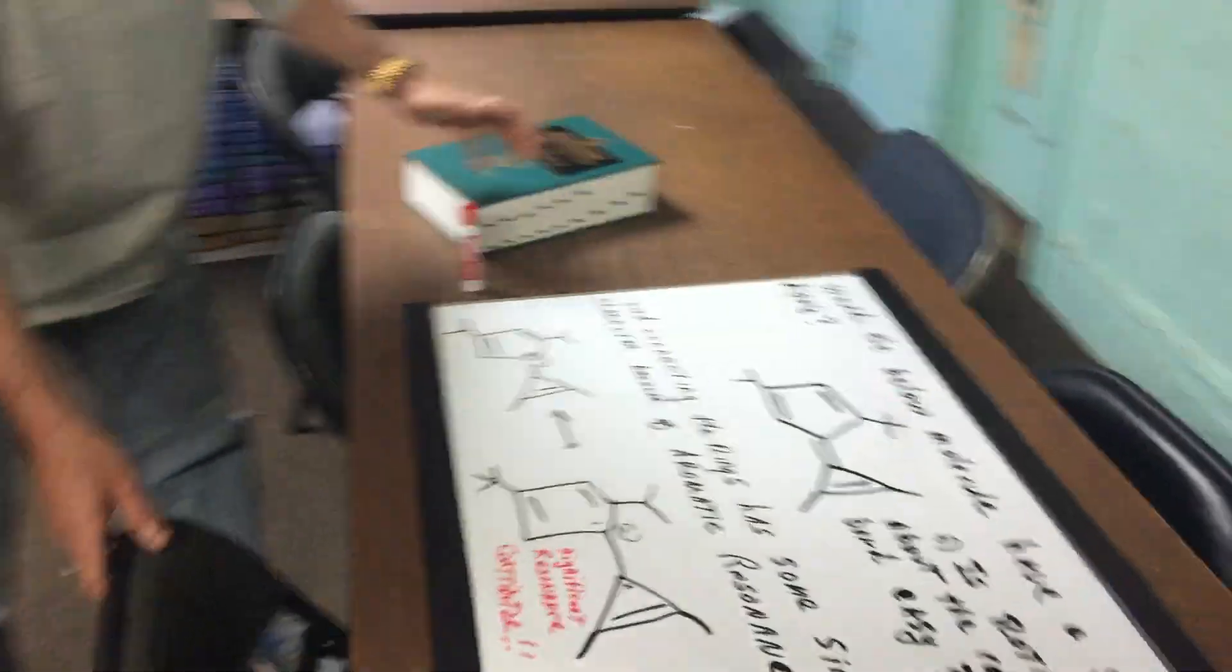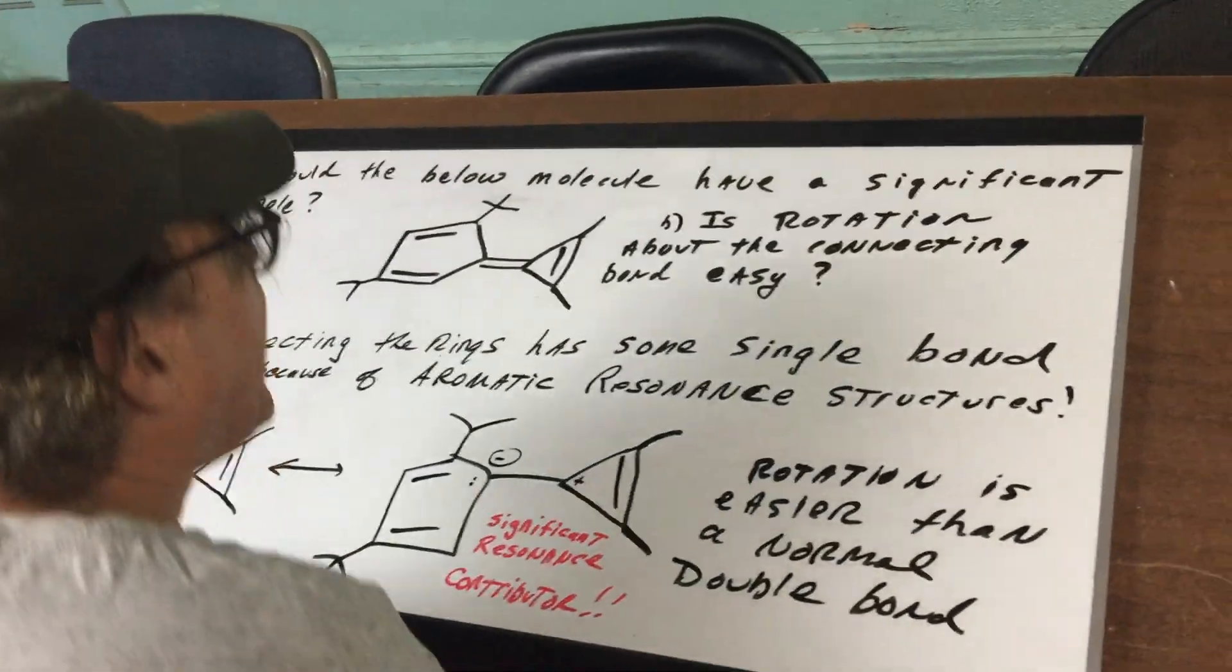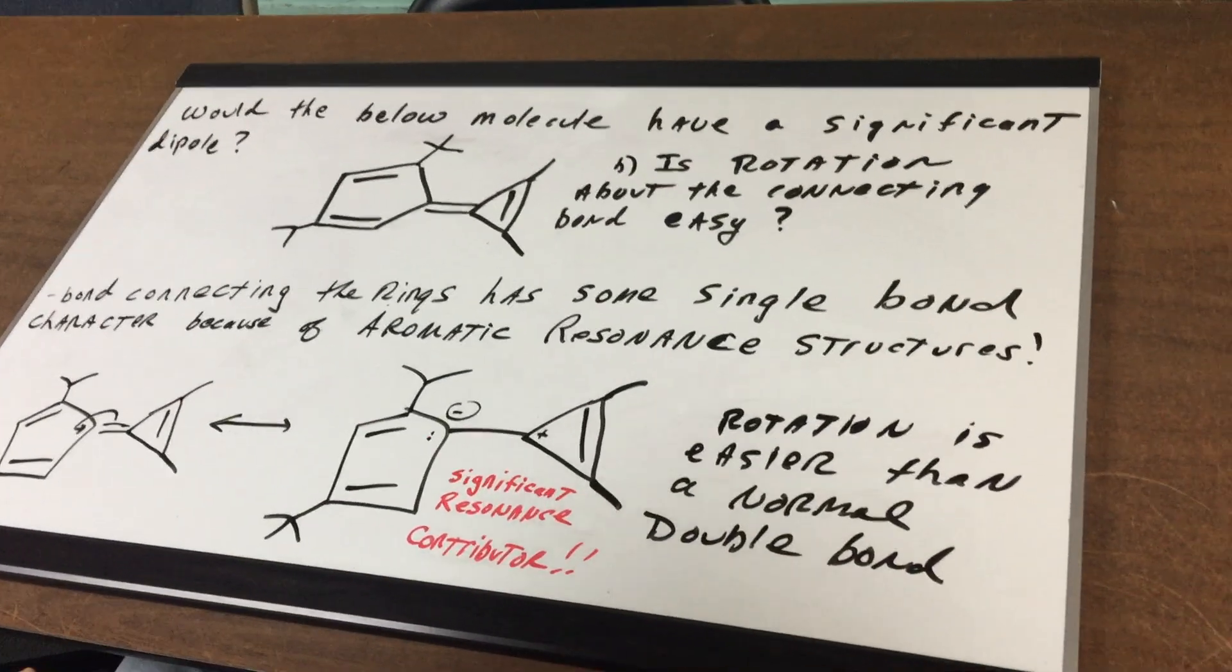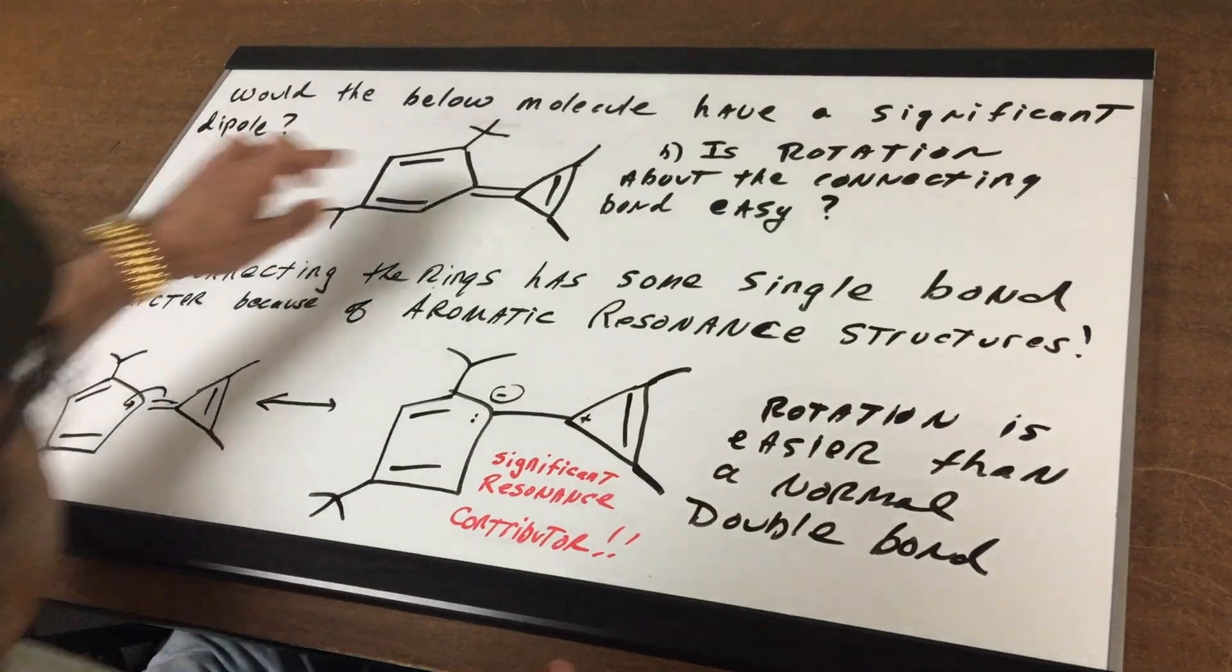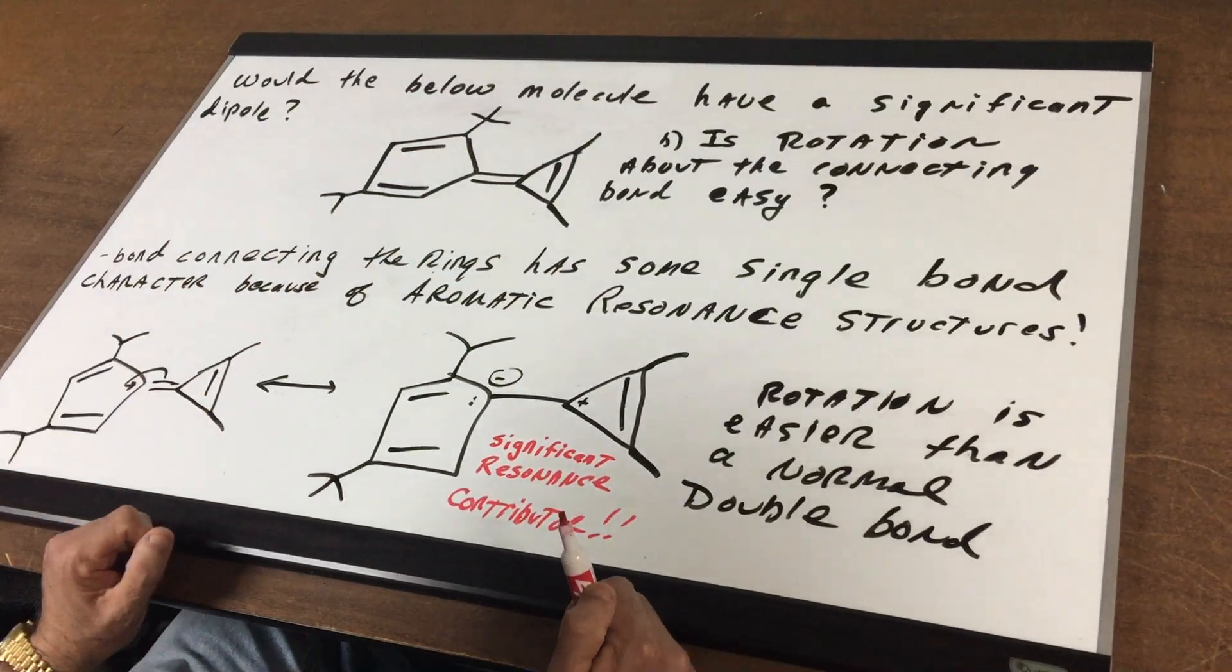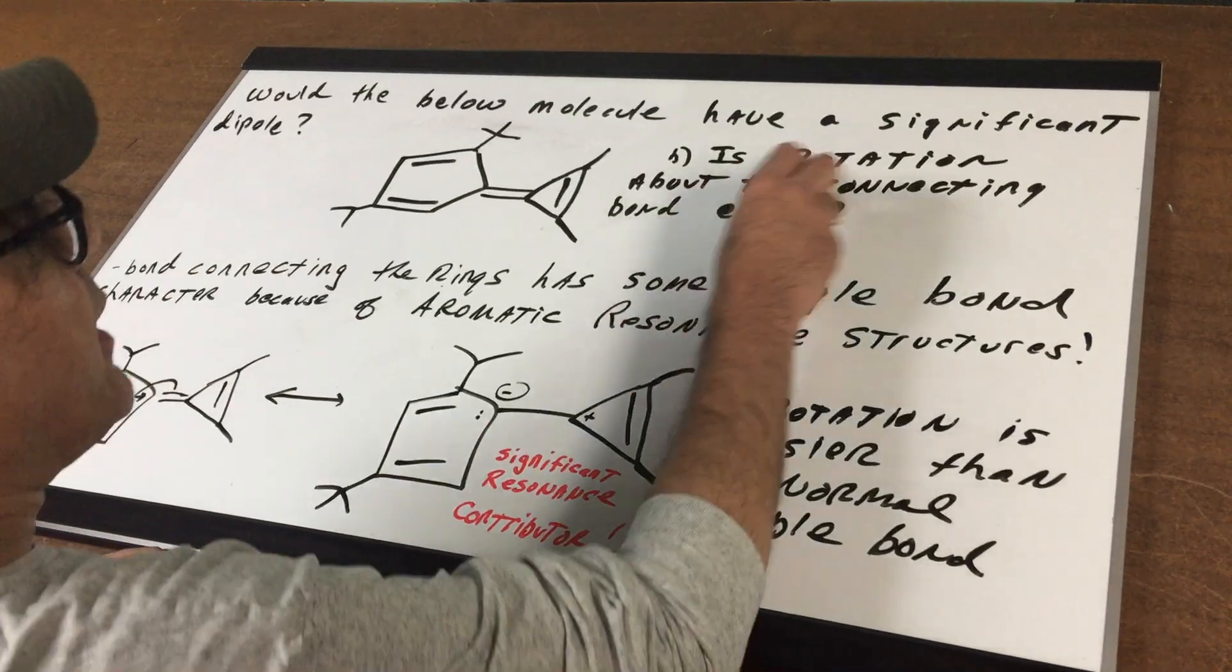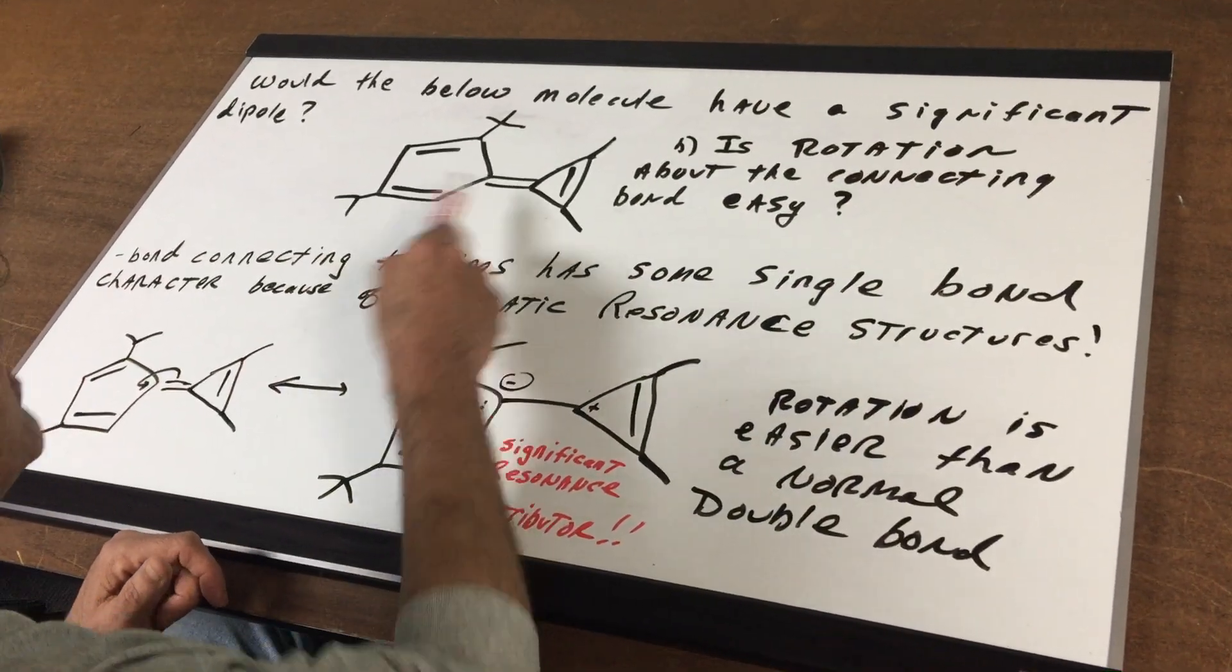So let's come around and let's have a look at a problem that I disguised to make it look difficult. But you're gonna see if you knew the concept, it's not that hard of a problem. Would the below molecule have a significant dipole? And finally, is rotation around this bond easy?